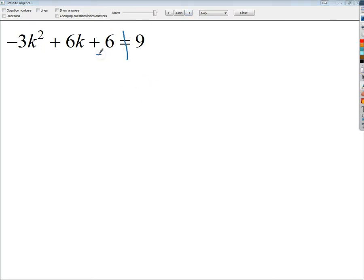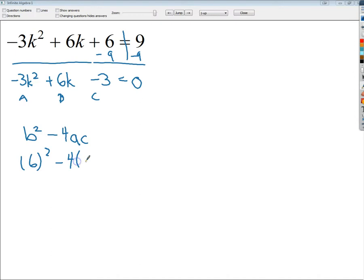So I need to subtract 9 from both sides and I'll get -3k² + 6k - 3 = 0, because if it's not equal to 0 you can't really say anything about it, you can't form a discriminant anyway. So here's A, B, C. I always write the formula down: b² - 4AC. So 6² minus 4 times A is -3, C is -3 as well. So I end up with 36 minus 4 times -3 times -3 which is 36. Once again I'm looking at one real solution.